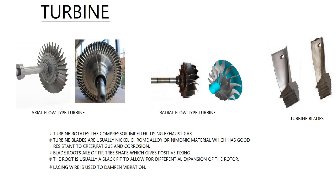In the radial flow turbine, the turbine nozzles work in a similar way as in the axial flow type — that is, pressure energy is converted into kinetic energy, and the gas is directed onto the turbine wheel. As the gas passes through the turbine wheel, it changes direction, and this change of direction produces an impulsive force which turns the wheel.